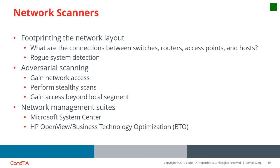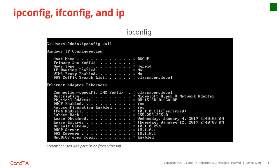Network management suites include Microsoft System Center and HP OpenView. The command to know the IP address of a device is ipconfig, and ipconfig /all provides more detailed information including the MAC address, IP address, subnet mask, default gateway, DHCP server IP, and DNS server IP. For Linux-based systems, the equivalent is ifconfig.